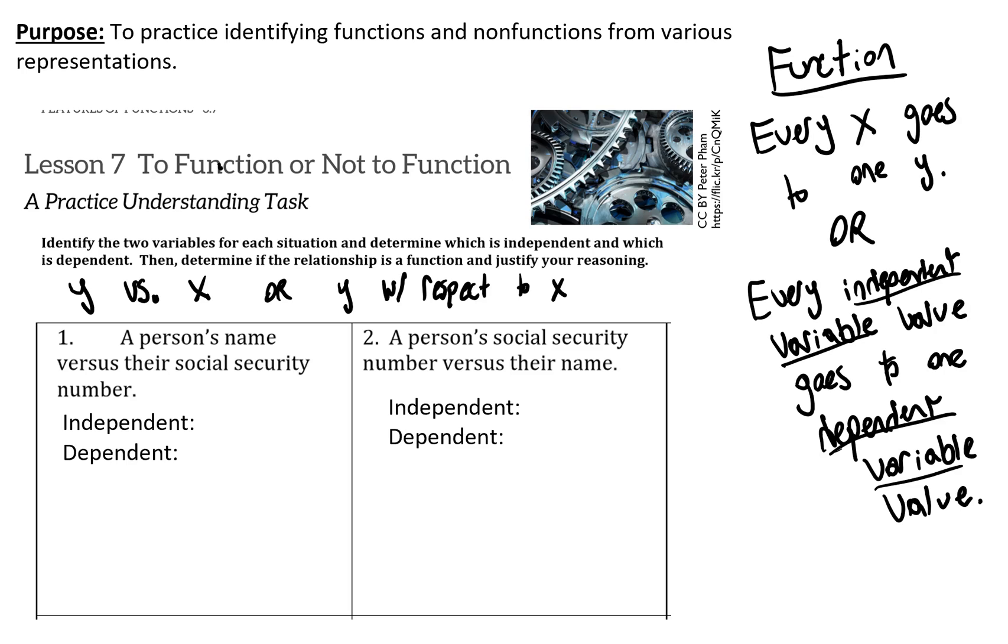So in problem one, a person's name versus their social security number, the dependent in this case is the name and the independent is the social security number. So this is a function because every social security number goes with one name. It's a distinct identifier for that person.